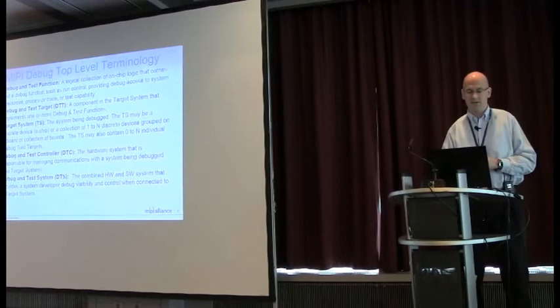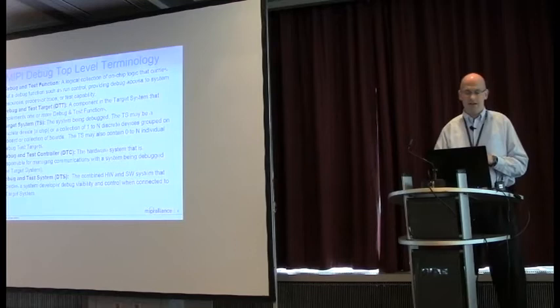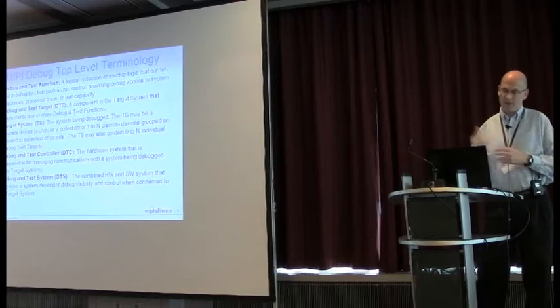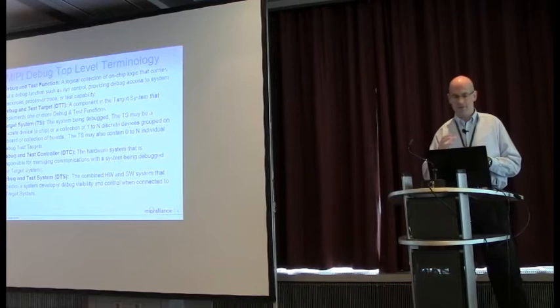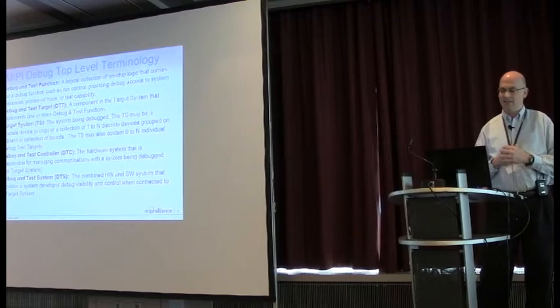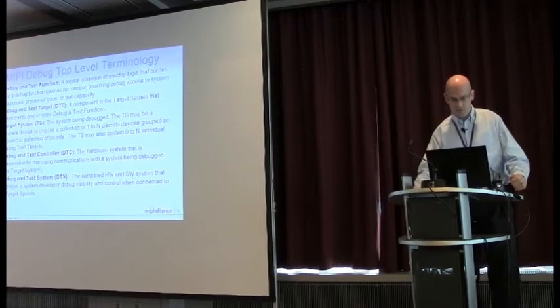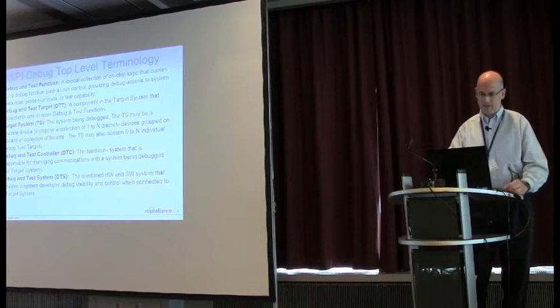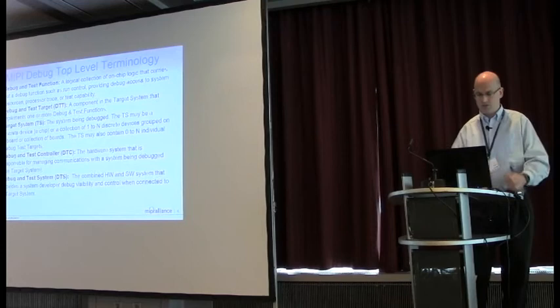And then you move up another higher level and there's this debug and test target. This is something like a chip that has multiple debug and test functions somewhere higher up in the chip architecture. And then we bundle all of the different debug and test targets up into something we call the target system. So this is something that can have multiple things that you need to touch or gather information from. Then on the other side, the tooling side, we came up with this word called the debug and test controller. This is the hardware that interfaces. In the classic debug world, this is what people used to call the emulator - a piece of hardware that interfaces to pins on a board, to a connector on a board that interfaces to pins on a chip. And then there's the debug and test system. This is the overarching system that contains a DTC, but also PCs or workstations that are used to interface with the user.